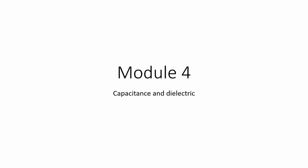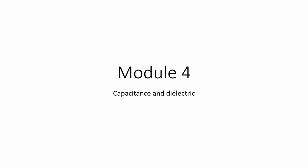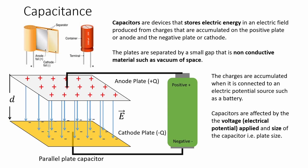In this module we will tackle capacitance and dielectrics. Capacitors are devices that store electric energy in an electric field produced from charges that are accumulated on the positive plate or anode and the negative plate or cathode. The plates are separated by a small gap of non-conductive material such as a vacuum of space. The charges are accumulated when connected to an electric potential source such as a battery.